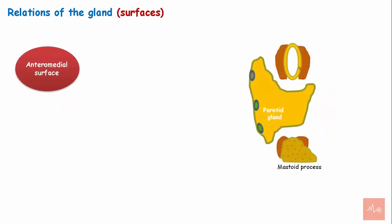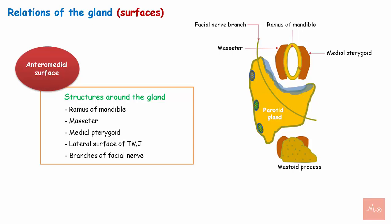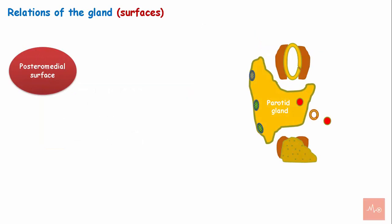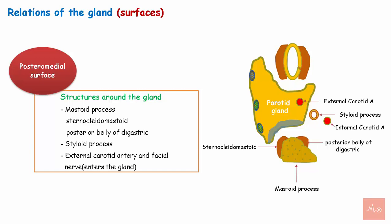The anteromedial surface follows the posterior border of the ramus of the mandible. The structures associated with the anteromedial surface are the ramus of the mandible, the masseter muscle, medial pterygoid muscle, lateral surface of the temporomandibular joint, and branches of the facial nerve. The posteromedial surface adapts to the mastoid process and its muscular attachments. The structures associated with it are the mastoid process with the sternocleidomastoid and posterior belly of the digastric muscle attached to it, the styloid process, and the external carotid artery which enters the gland at this point.